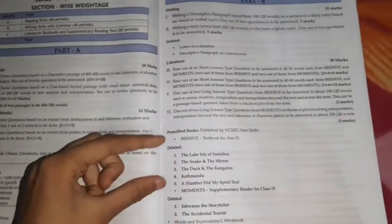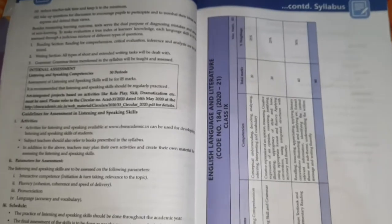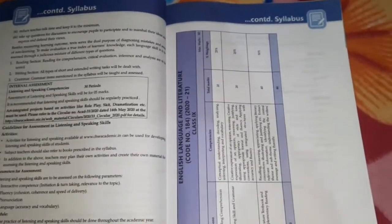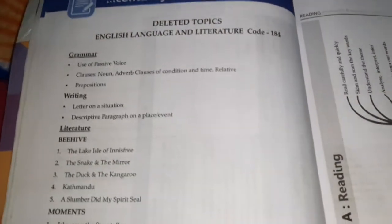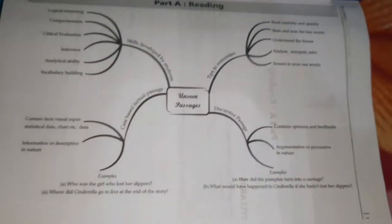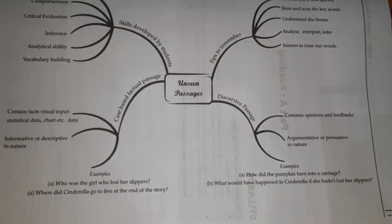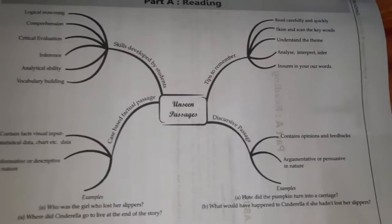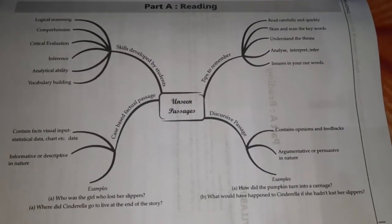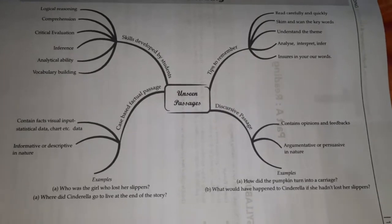In this book you can see they have explained very well about the reduced and deleted syllabus. This covers deleted topics for English Language and Literature. Part A is unseen passages. I think this is the best — you can take a screenshot of this for your understanding.